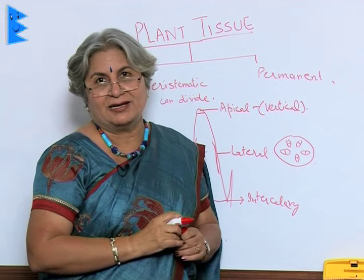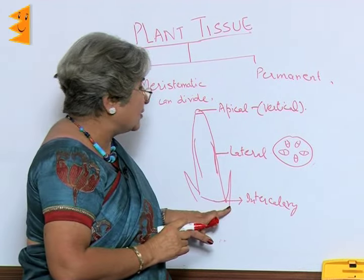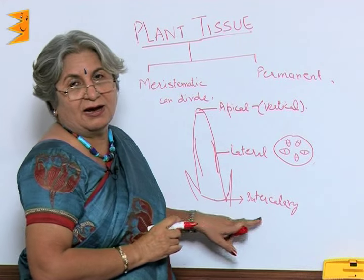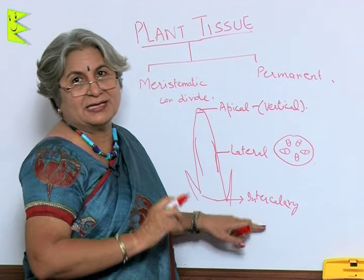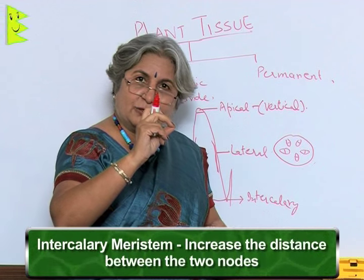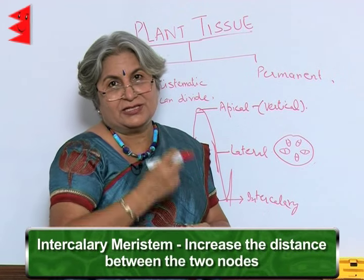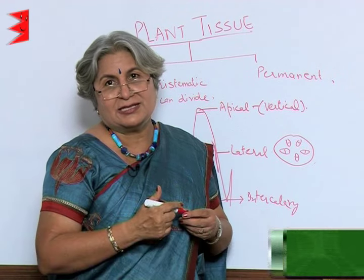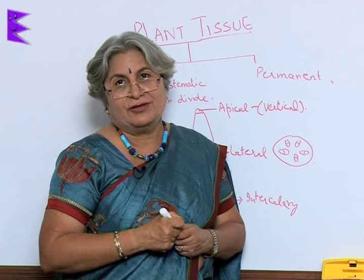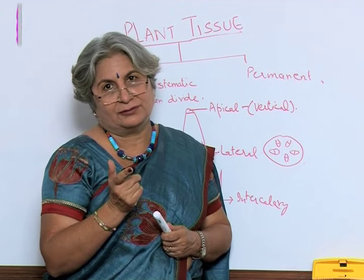At the base of nodes or leaves are the intercalary meristems, which increase the distance between two nodes — the internode. This is the meristematic tissue, which is mainly responsible for growth.